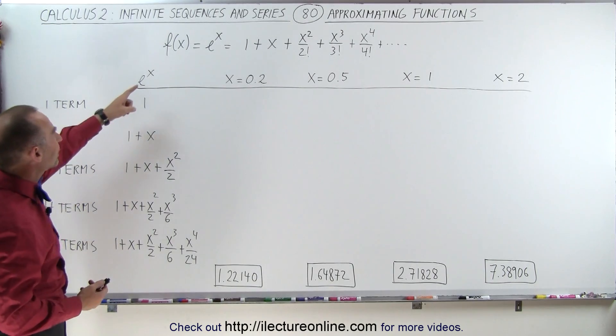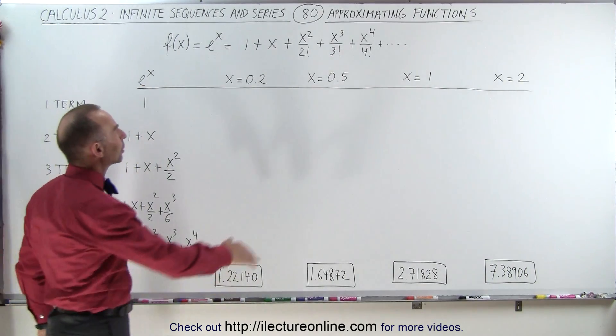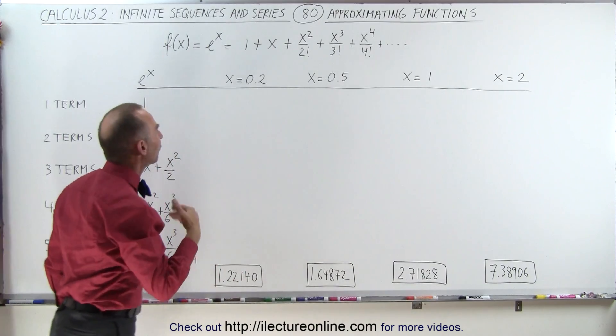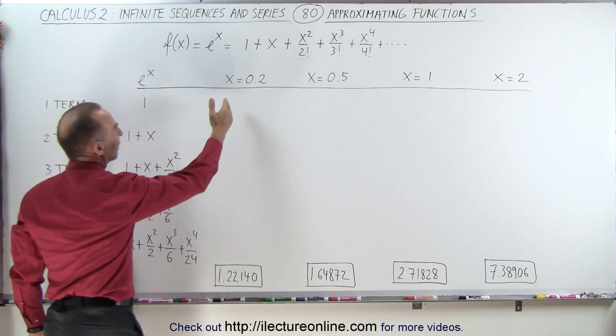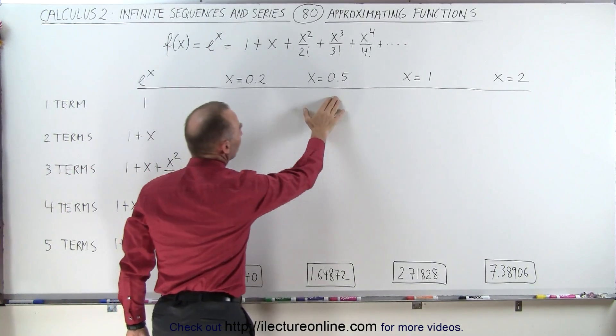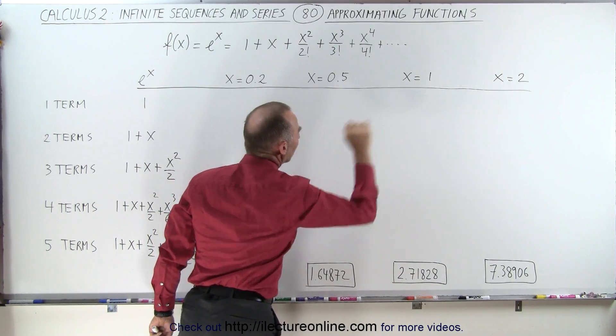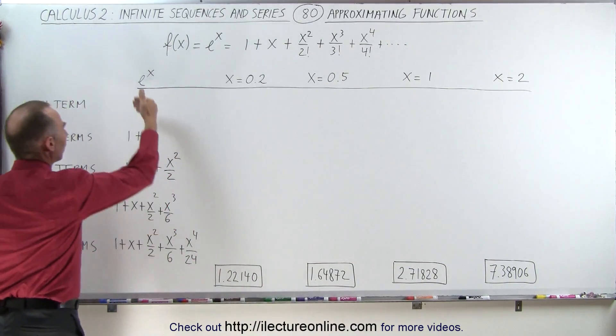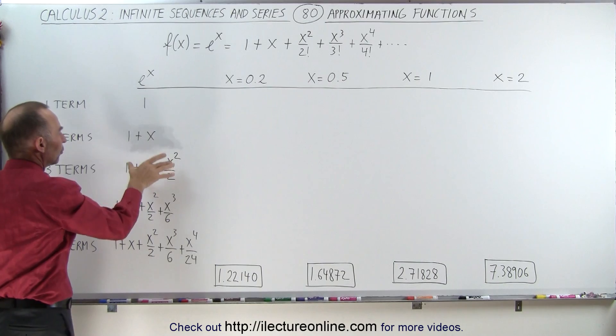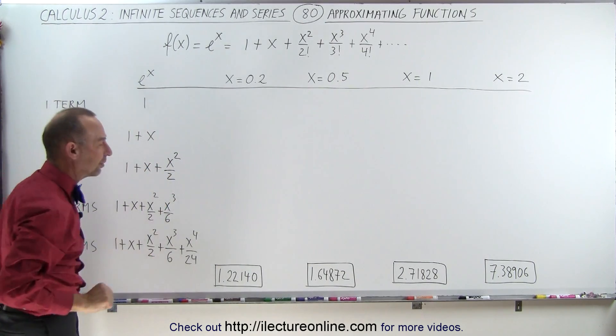We're going to use the equation e^(3x). We know the Maclaurin series for that is right here, and we're going to evaluate it for values of x equals 0.2, 0.5, x equals 1, and x equals 2 for one term, two terms, three terms, four terms, and five terms in the series.